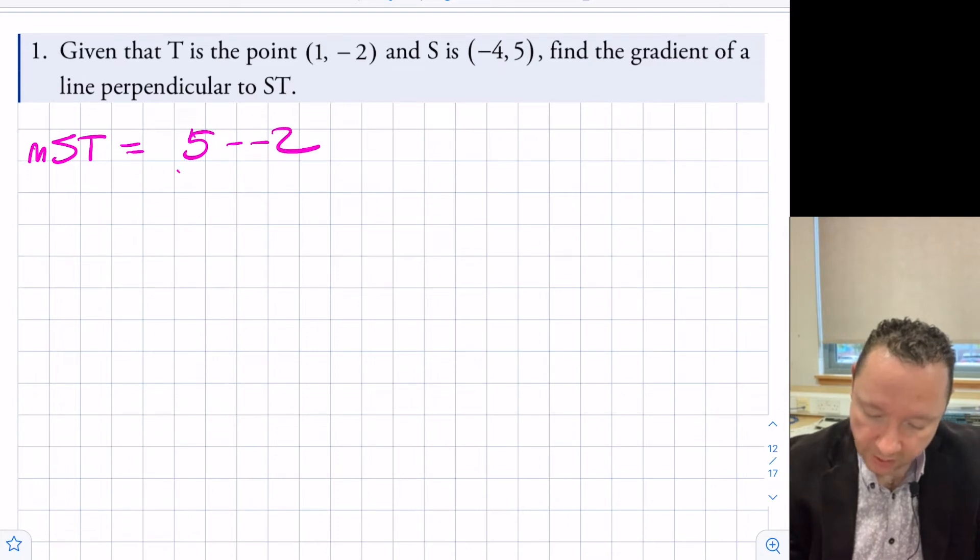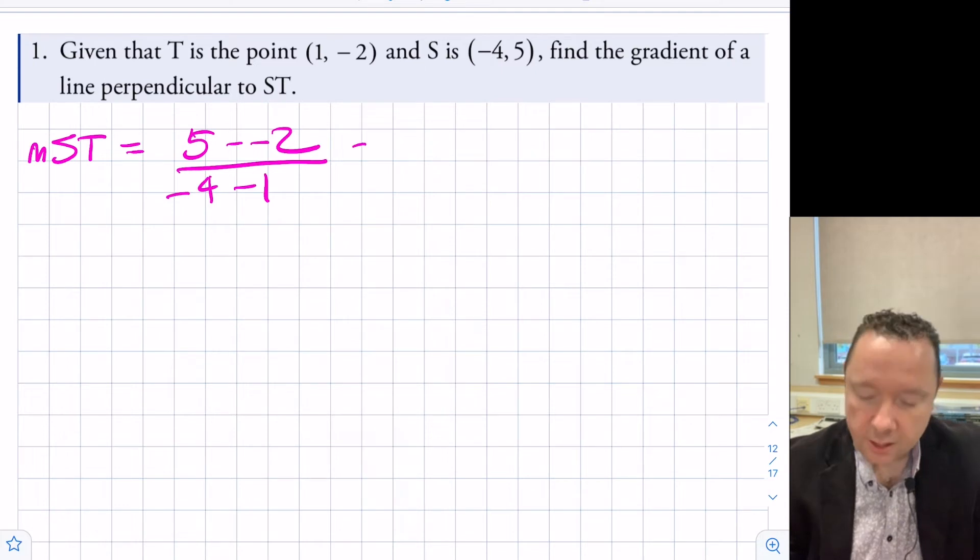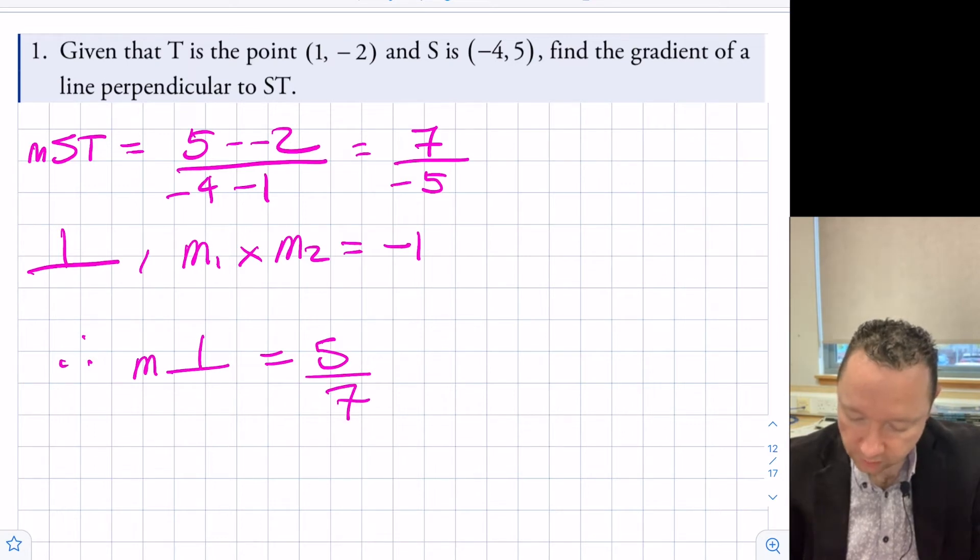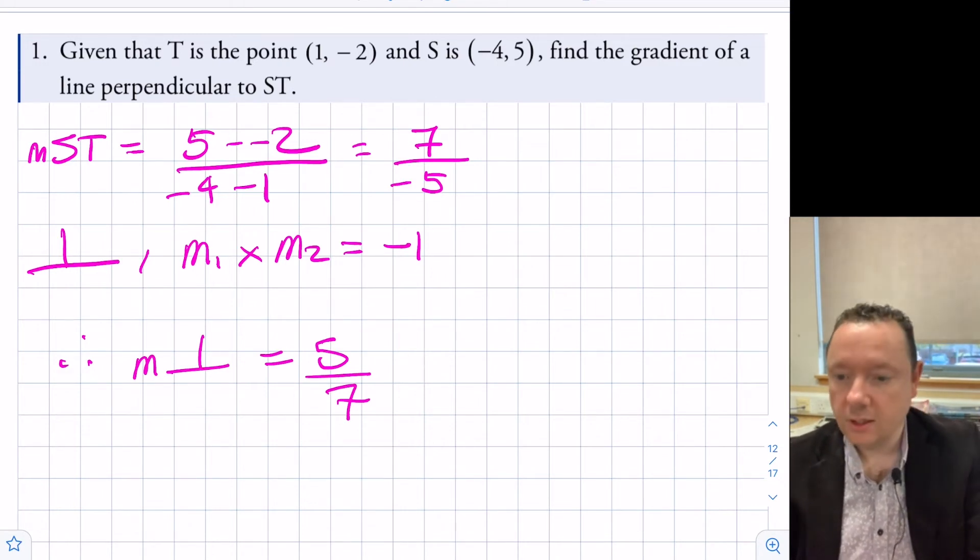Our starting point is, let's find the gradient of ST. That's just 5 minus -2, y2 minus y1, over -4 minus 1, x2 minus x1. That gives me 7 over -5. Since they're perpendicular, gradient of the first one times the gradient of the second one must equal minus one. Therefore, the gradient of the perpendicular line is equal to 5 over 7. Let's flip that upside down and put a minus in front of that, but it's already got a minus, so it becomes a plus.